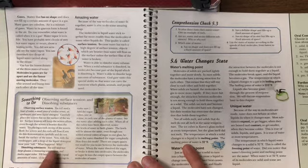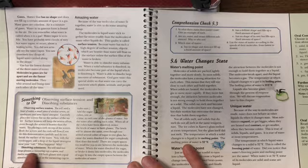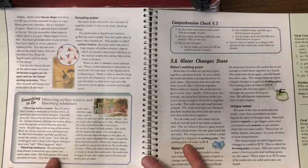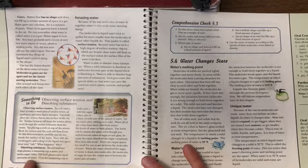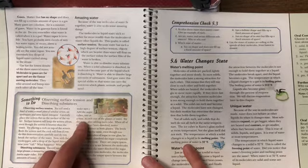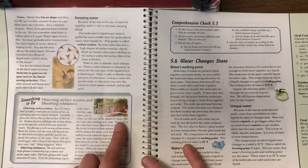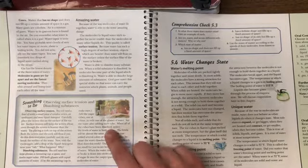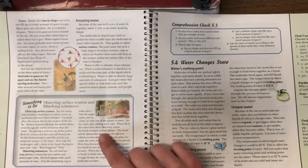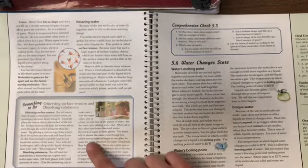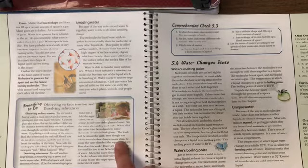Let's keep reading to find out. Dissolving substances. You will need two large glasses, a measuring cup, a spoon, and 12 sugar cubes. Fill both glasses with equal amounts of water. Use the measuring cup to make sure. Add the sugar cubes, one at a time, to only one of the glasses of water. Stir the water after adding each cube. When all the cubes have been dissolved, notice the levels of water in both glasses. The levels will be almost the same, even though you added several cubes of sugar to one glass.